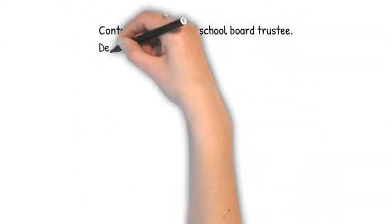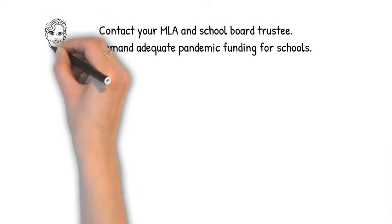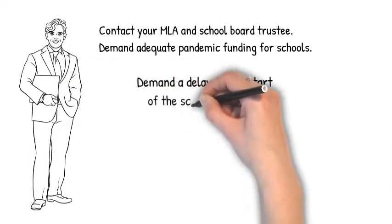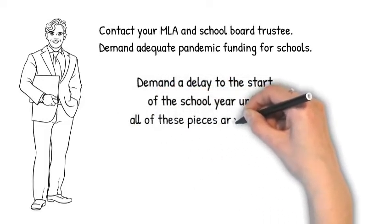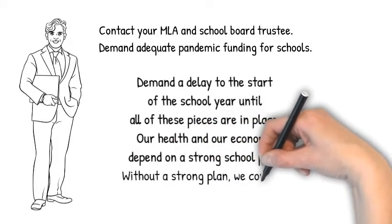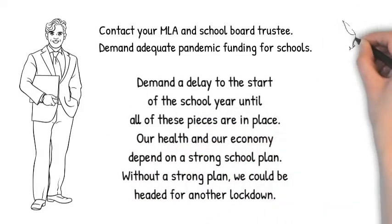Contact your MLA and your school board trustee. Demand adequate pandemic funding for schools. Demand a delay to the start of the school year until all of these pieces are in place. Our health and our economy depend on a strong school plan. Without a strong school plan, we could be headed for another lockdown.